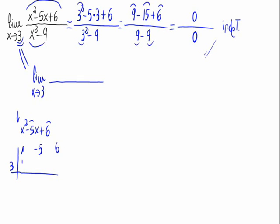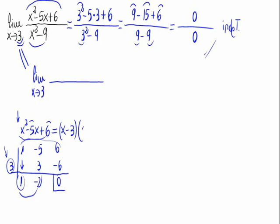We descend the 1. 3 times 1 is 3; minus 5 plus 3 gives minus 2. Then 3 times minus 2 is minus 6; 6 minus 6 equals 0. So x squared minus 5x plus 6 equals x minus 3 times x minus 2, with remainder 0. We obtain x squared minus 5x plus 6 equals x minus 3 times x minus 2.